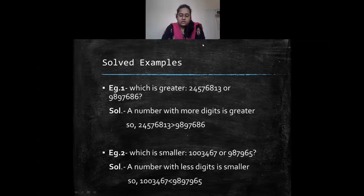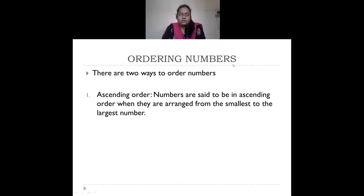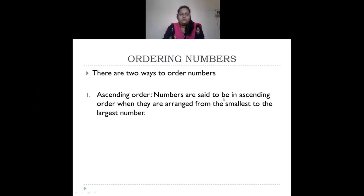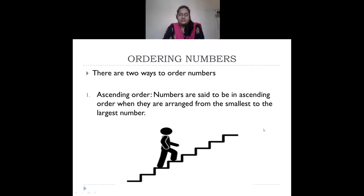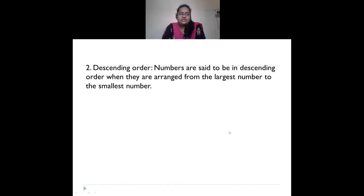Now, ordering of numbers. There are two ways to order numbers: ascending order and descending order. In ascending order, numbers are arranged from the smallest to the largest — like climbing up stairs, moving from a lower level to a higher level.